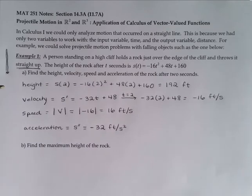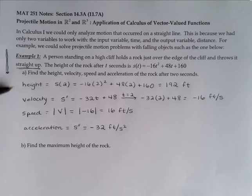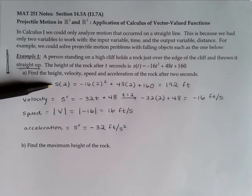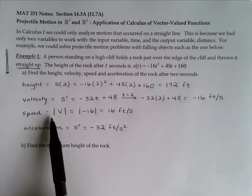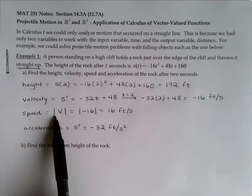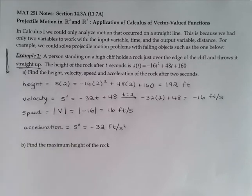When we get to our vector-valued functions in a few minutes, these same relationships are still going to hold true. Even when our position function is a vector, our velocity is still going to be the derivative. Speed will now be interpreted as magnitude, and acceleration is still going to be the second derivative. So those relationships won't change.